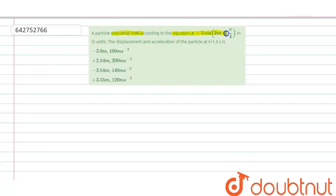x is equal to 5 cos 2 pi t plus pi by 4 in SI units. The displacement and acceleration of the particle at t is equal to 1.5 second is what?